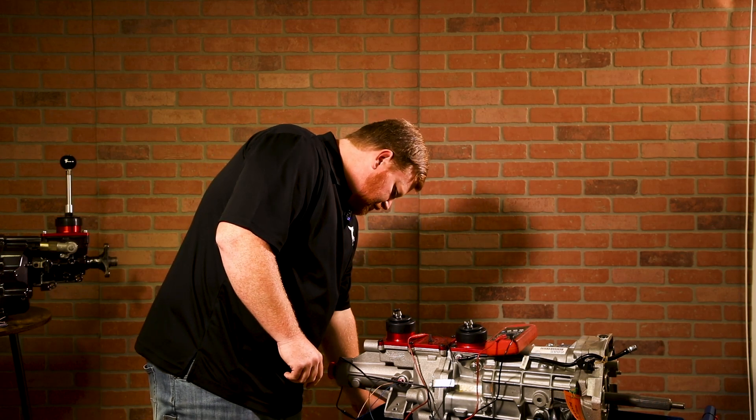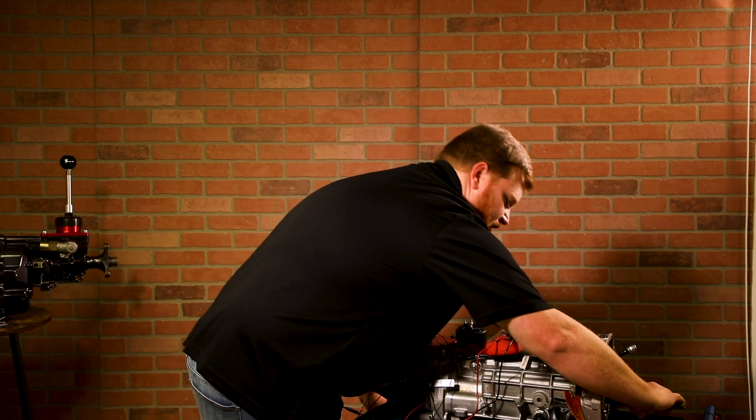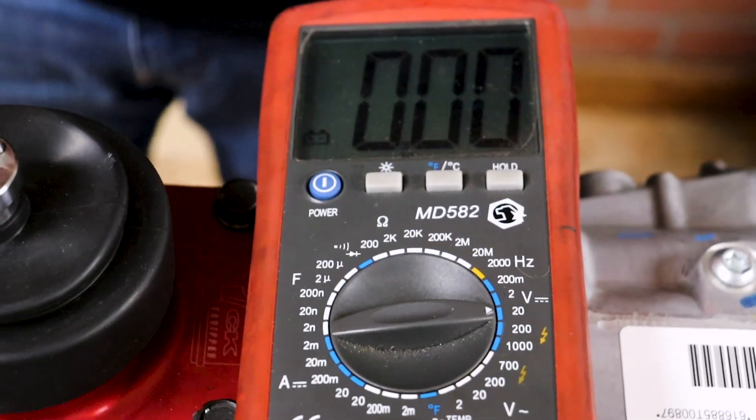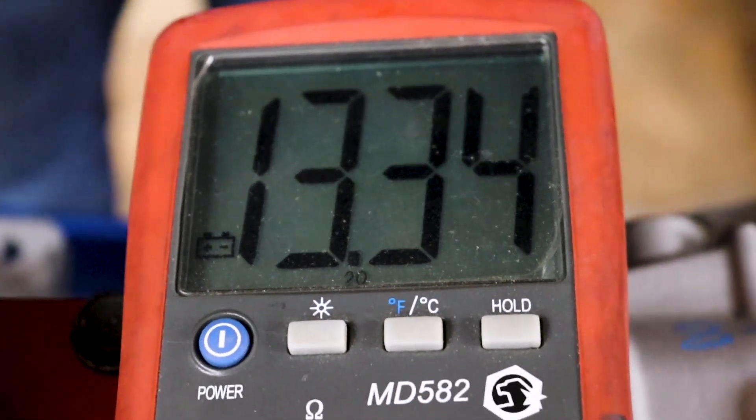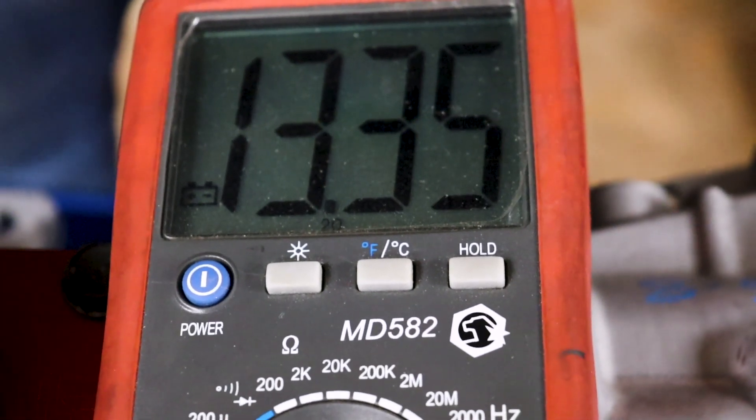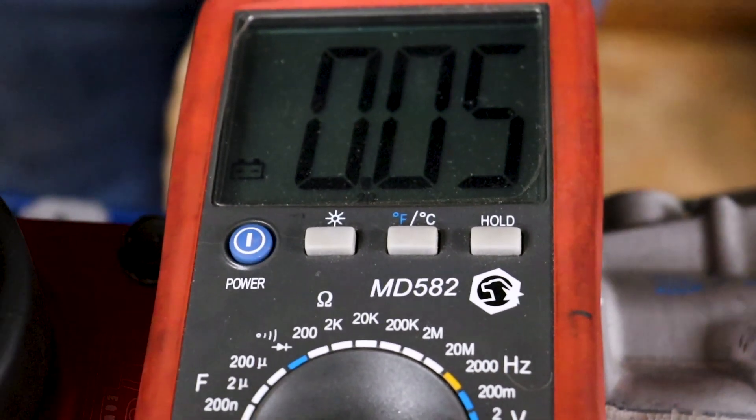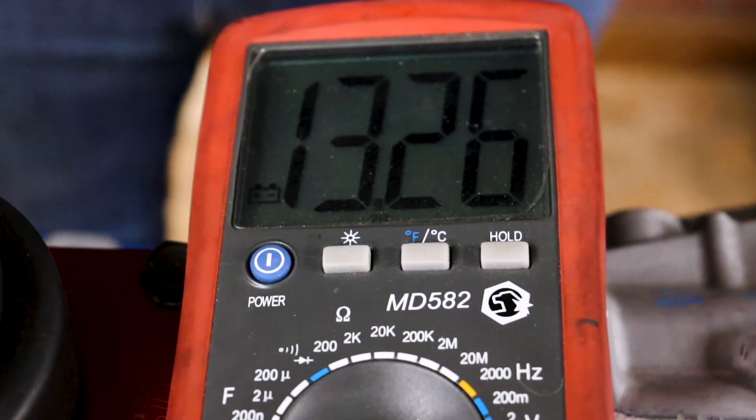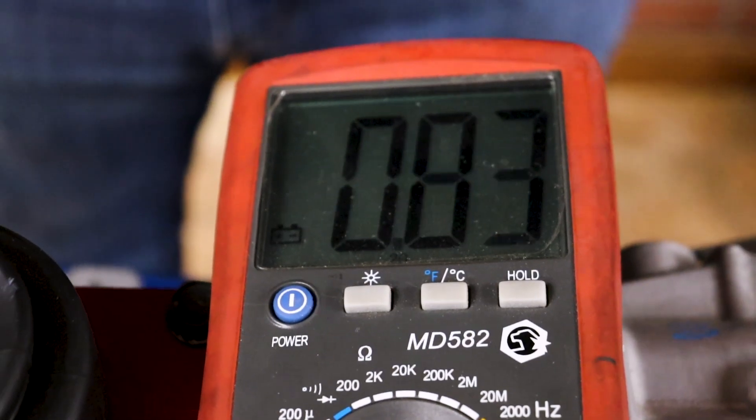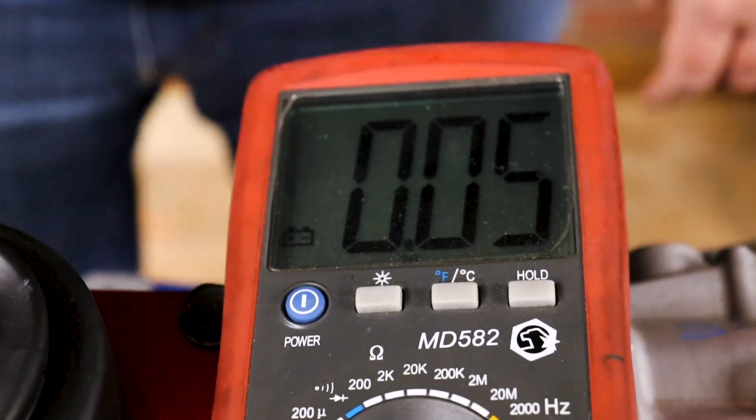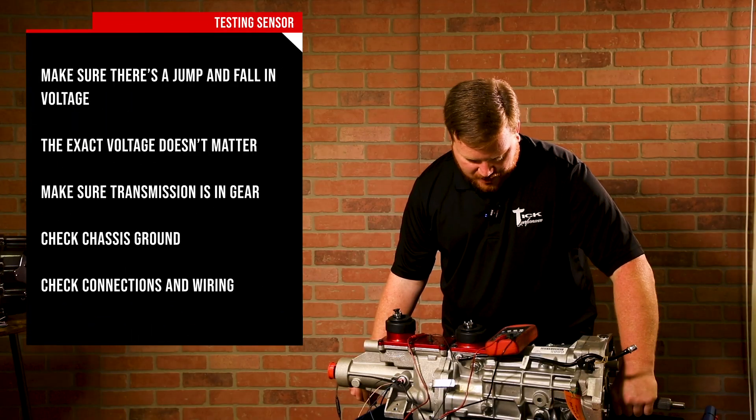You can ground your meter and then you can rotate the input shaft with the transmission in gear, and it will show you a voltage differential as the teeth pass the end of the sensor. You can see right here that the numbers are fluctuating where it's passing the teeth in between, there's an air gap. So it voltage drops away and then it picks up voltage as it comes by one of the teeth.